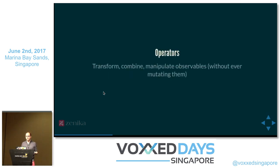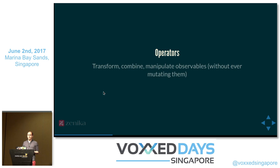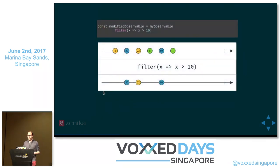Perhaps the most important things in RxJS are operators. Operators are simply functions that allow you to transform your observables, combine them, and manipulate them. Each operator returns a new observable and won't change the original one. This is what allows you to make really complex applications and behaviors starting from simple building blocks and simple observables. I'm going to show you some examples to illustrate that.